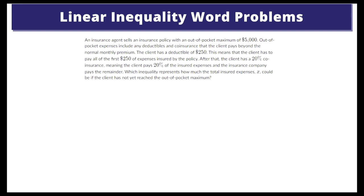Okay, let's see. Let's write down the key parts. There's an out-of-pocket maximum of $5,000. And there's a $250 deductible, so they have to make this payment. And there's 20% of whatever is not in that $250. The 20% could be represented as 0.2, and the rest could be represented as X minus 250.